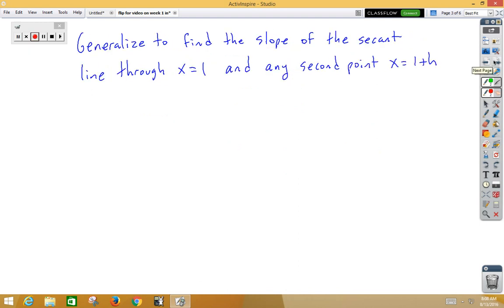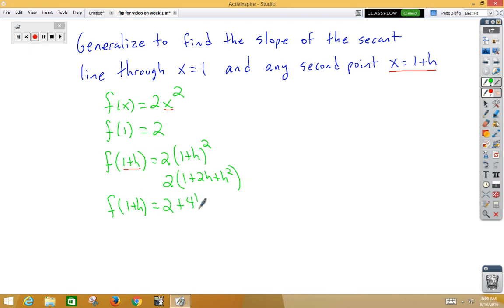Now let's generalize that for any second point x = 1 + h. So our function is still f(x) = 2x². We are still using f(1), and f(1) would be 2. But now our second point is a generalized point, 1 + h. Well if I want to find f(1 + h), I'm going to have to substitute 1 + h in for x, which gives me 2(1 + h)². We can do a little simplifying by foiling this. If we foil this, we get 1 + 2h + h². So f(1 + h) is 2 + 4h + 2h².